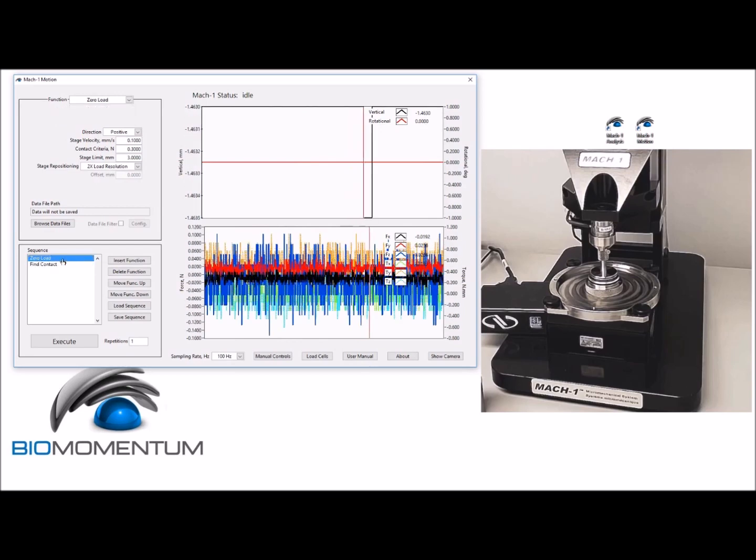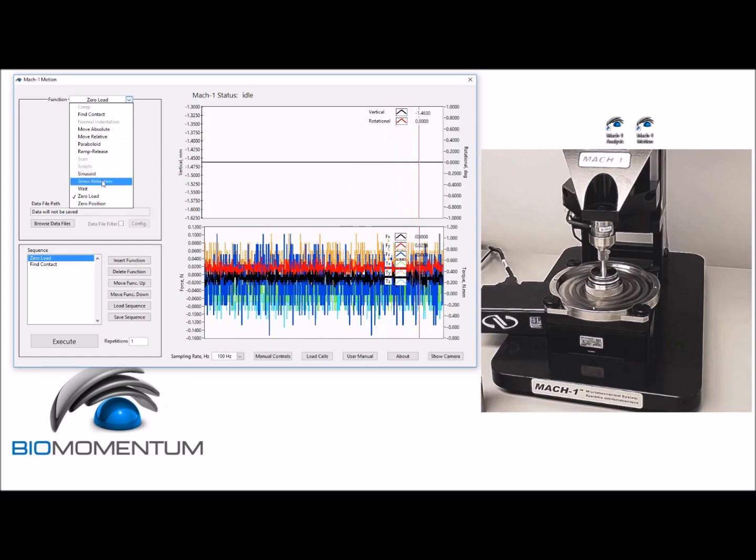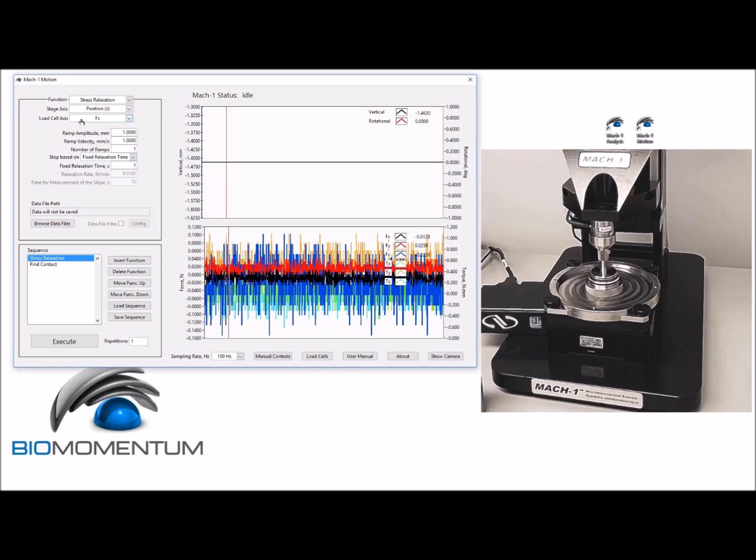With the position Z as a stage axis and a force in the Z direction as the load cell axis, with a ramp amplitude of 10 percent of the sample thickness, which corresponds to 0.1463 millimeter.